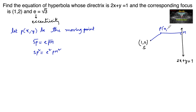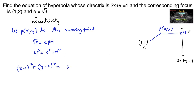Let P be the point (x, y). So the distance SP is: (x minus 1) whole square plus (y minus 2) whole square, which is equal to e square — that is root 3 whole square, which is 3 — times the perpendicular distance from the point to the line. So we write 2x plus y minus 1, upon root of 2 square plus 1 square.